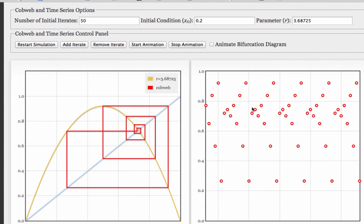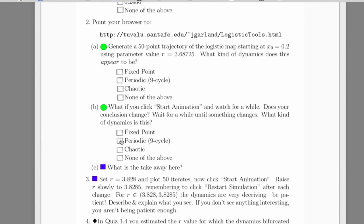Now I'm going to stop the animation so we can count and see what kind of period it is. Looks like it repeats every one, two, three, four, five, six, seven, eight, nine. That's a nine cycle. So the answer is this one.